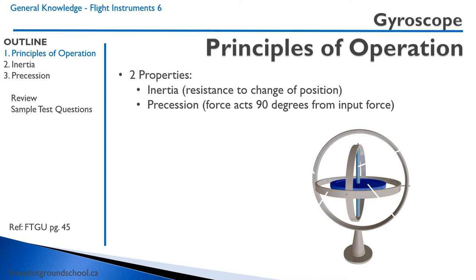A gyroscope has two properties. The first one is gyroscopic inertia, and that's a resistance to change of position. You can see that when you play with the gyroscope — no matter which way you turn it, that gyroscope always remains in the same position.